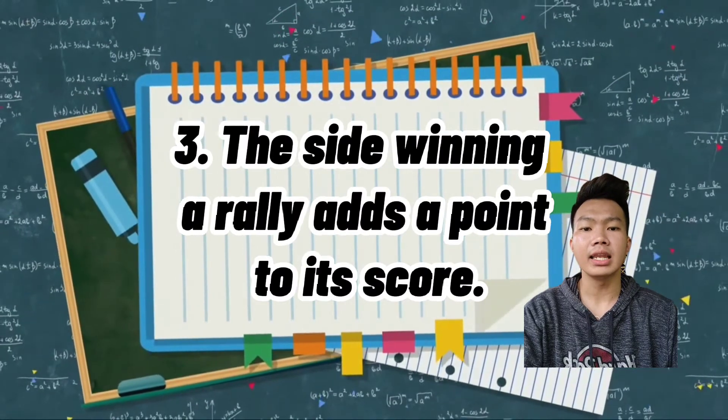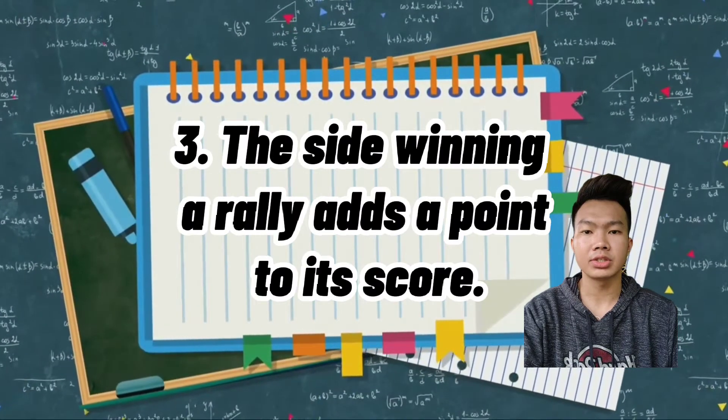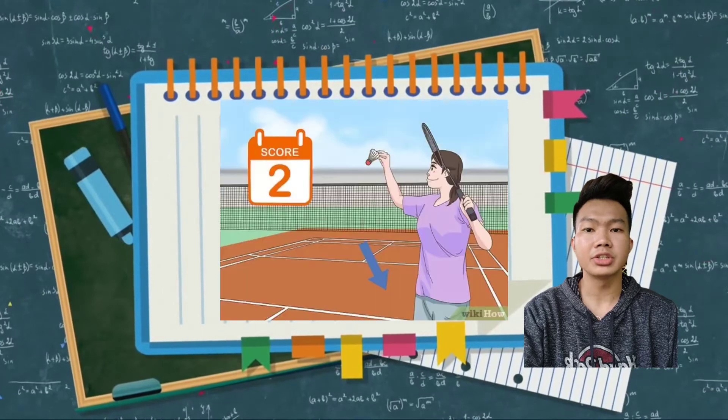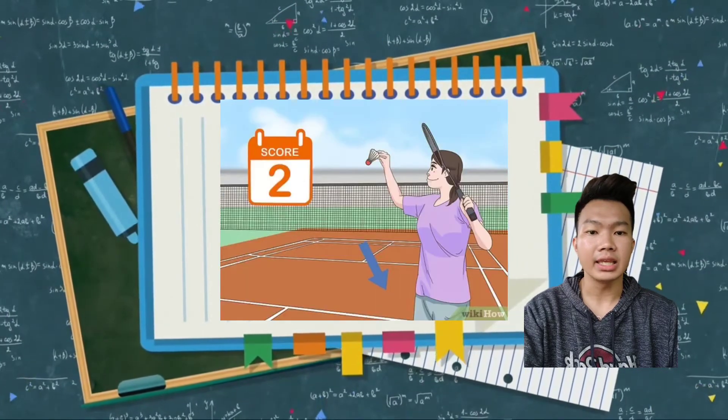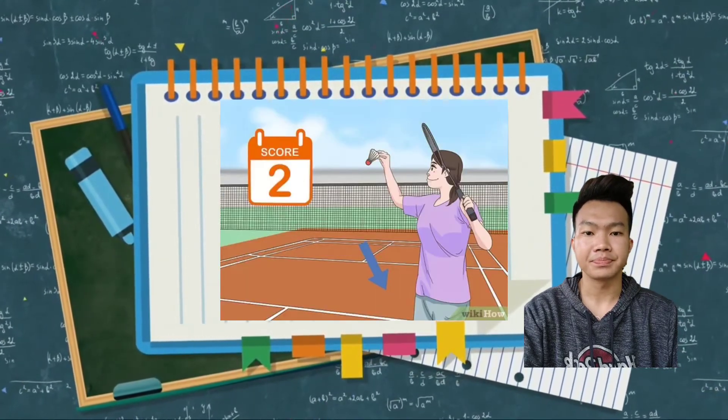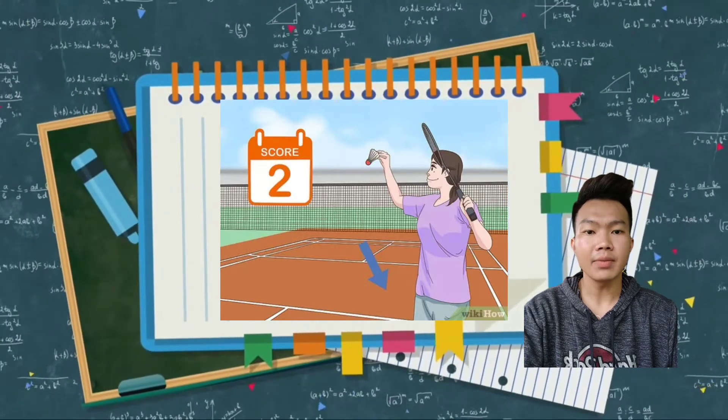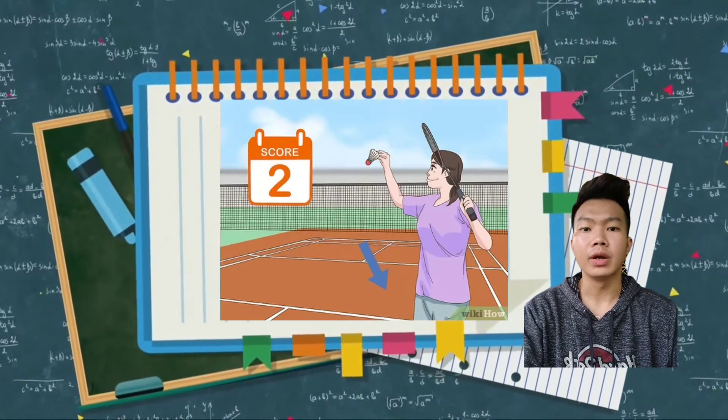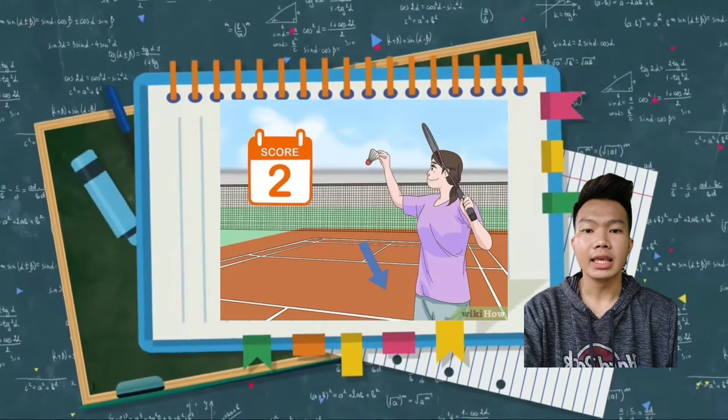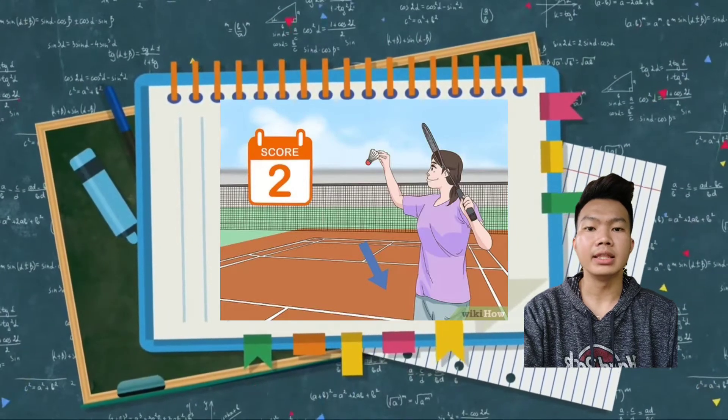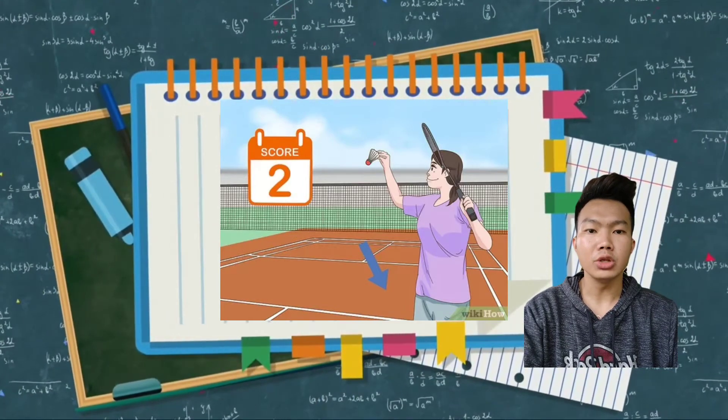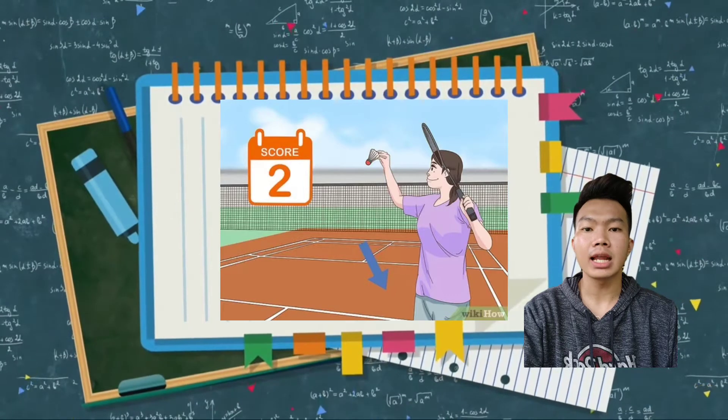Number three, the side winning a rally adds a point to its score. If player one served and won the rally, one point is added to his score. The same with player two or pair two. If he wins a rally, he will gain a point to be added to his score. Kung sinong player or pair ang nanalo sa rally, siya or sila ay magkakaroon ng one point.